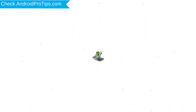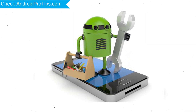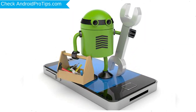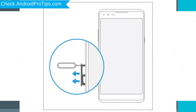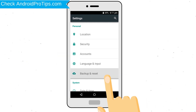Before resetting your mobile: your battery must be above 50%, remove SD cards and SIMs, and backup your Android mobile data if possible.